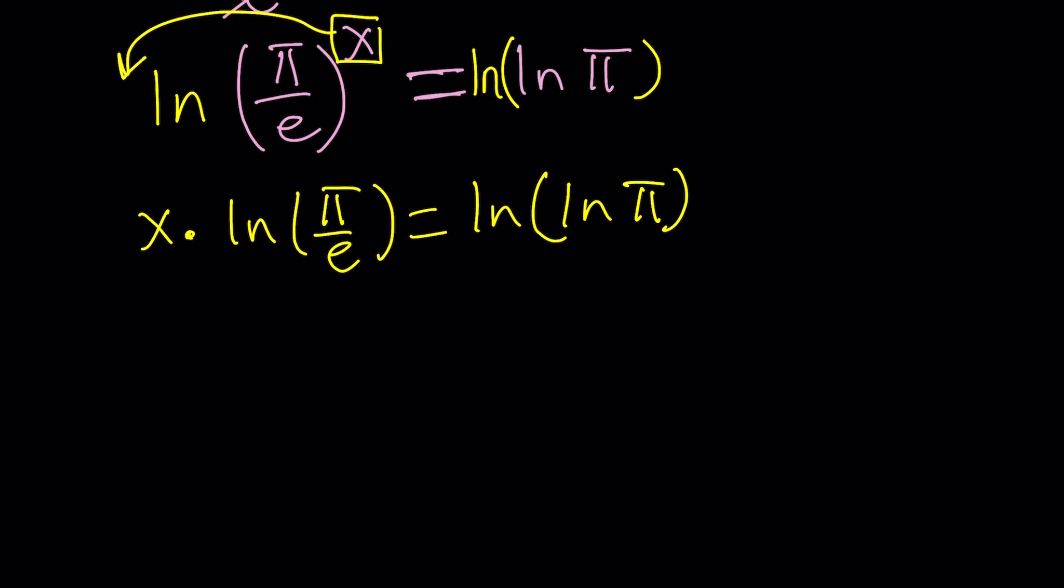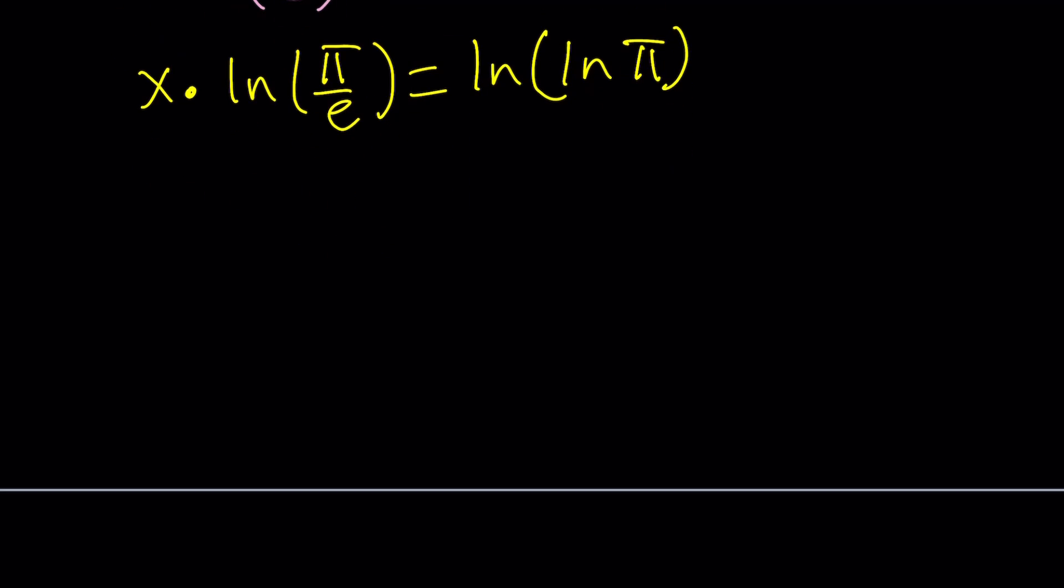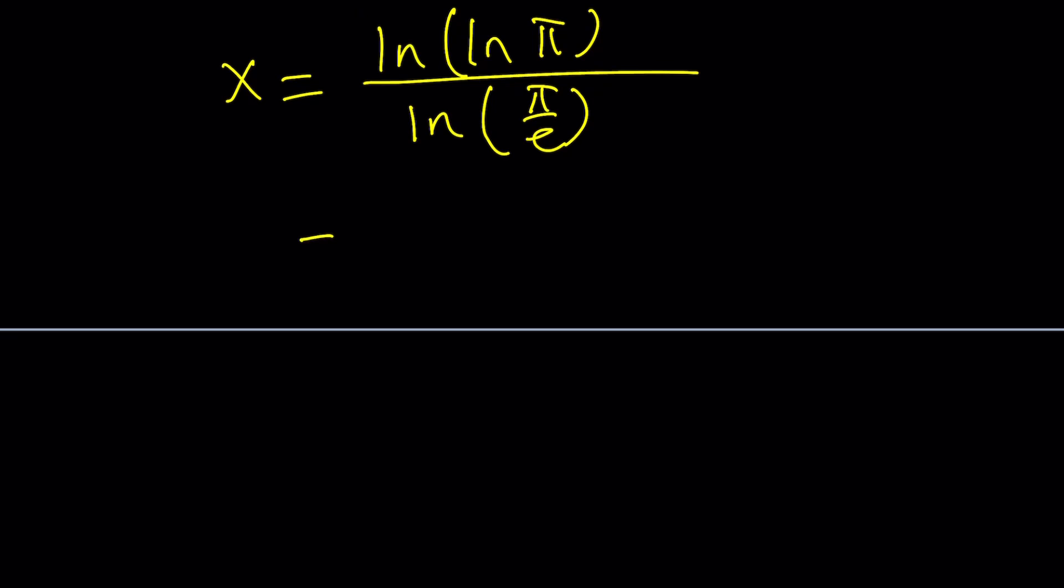And finally, to get x by itself, we're going to divide both sides by ln π over e. That's going to give us ln ln π over ln π over e. As you know, ln π over e can actually be split up into a difference. So we can write as ln π minus ln e.